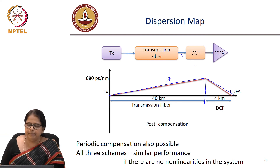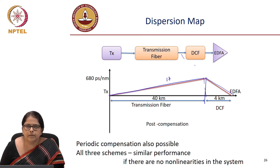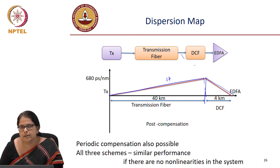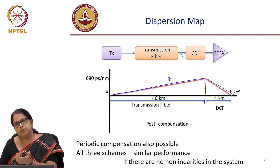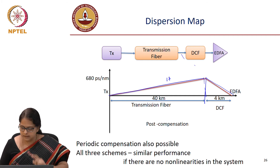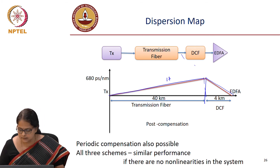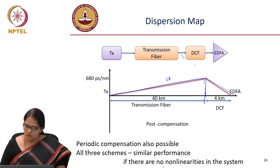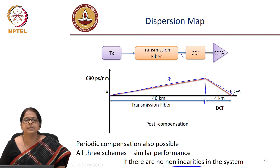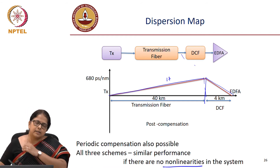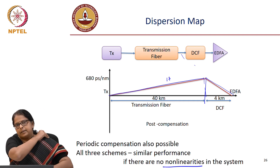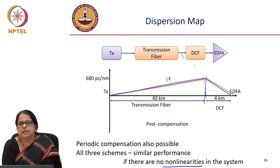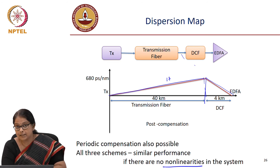Pre-compensation, post-compensation, and periodic compensation are all acceptable. There was a time when EDFAs were available with dispersion compensating fibres attached, so that the loss of the DCF is handled by the EDFA. All these schemes are possible assuming there are no non-linearities in the system. If there are non-linear effects, then placement starts to matter. What exactly is this non-linear behavior of the system is our next module.